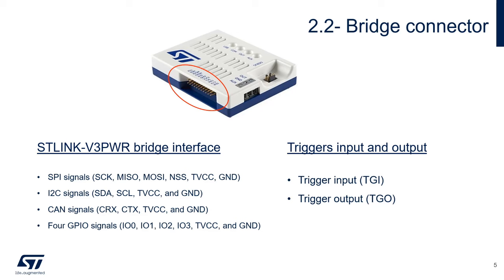The SWO pin is optional and required only for Single Wire Viewer tracing. The bridge connector allows access to other widely used ST-Link functionality. The ST-Link V3Power implements a USB interface dedicated to bridging USB to SPI, I2C, and CAN of the STM32 microcontroller target and controlling four GPIOs. This interface is mainly used by STM32 Cube Programmer to allow target programming through SPI, I2C, and CAN bootloader.